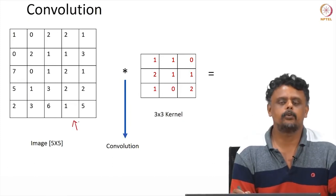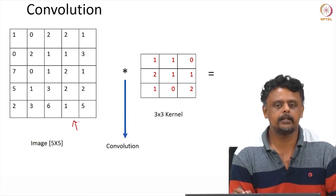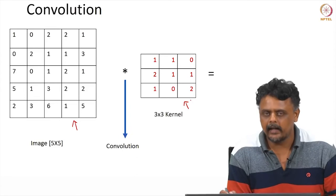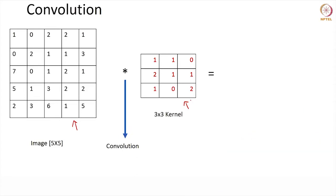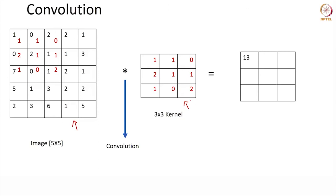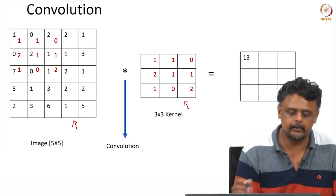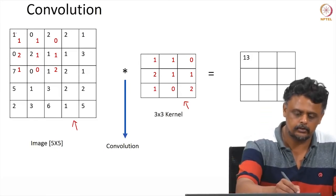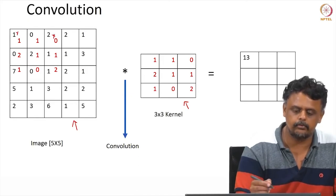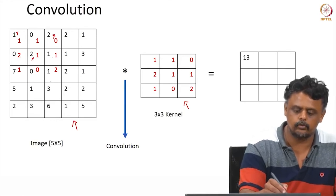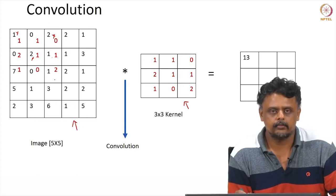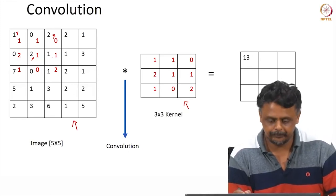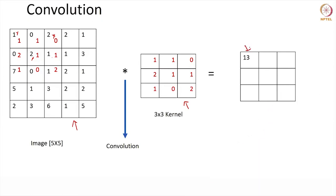On the left is a toy image — a 5×5 image — and on the right is a 3×3 convolutional kernel. To perform convolution, you superimpose the kernel starting at the top-left of the image, multiply corresponding elements — for example, 1×1 + 0×1 + 2×0 + 1×1 + 2×1 and so on — and sum them up. This sum of products gives one element in your output feature map.